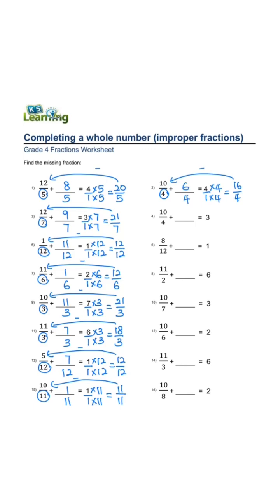3 over 1, denominator is 4. 3 times 4, 1 times 4 equals 12 over 4. 12 minus 10 is 2 over 4. 1 over 1,